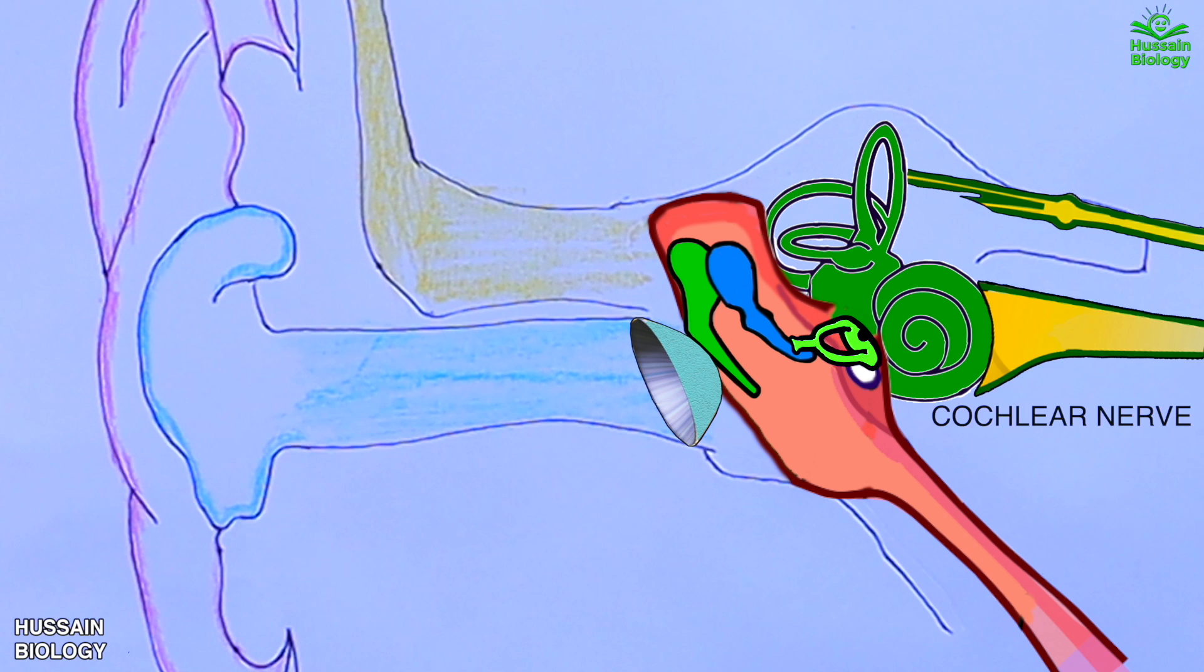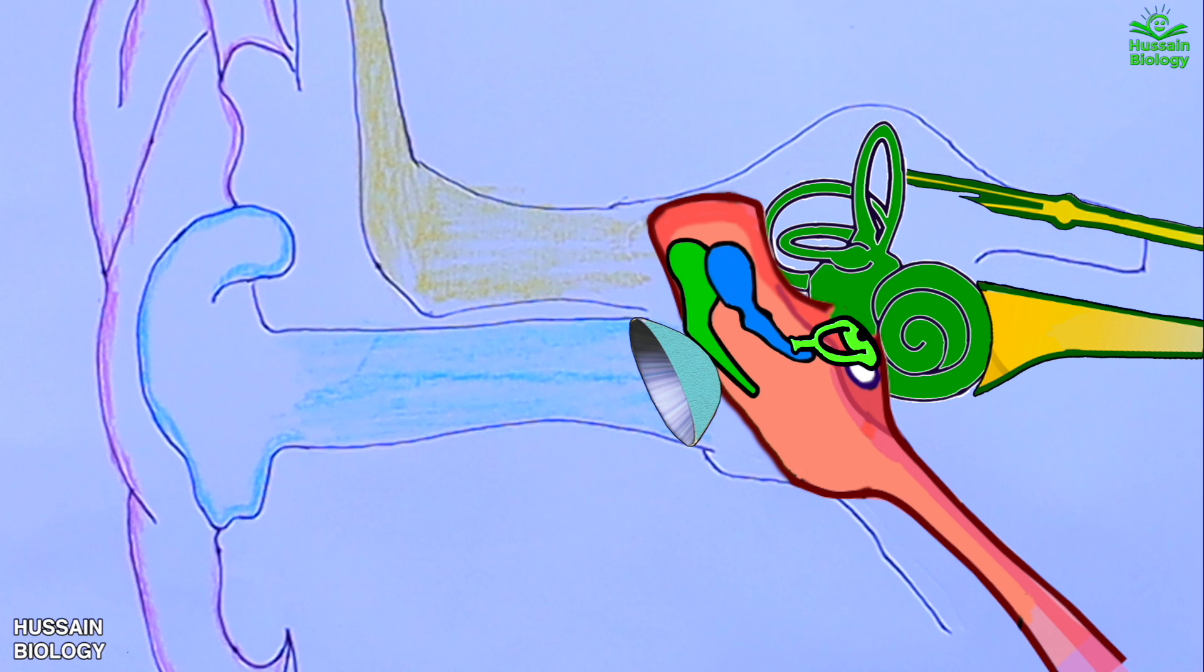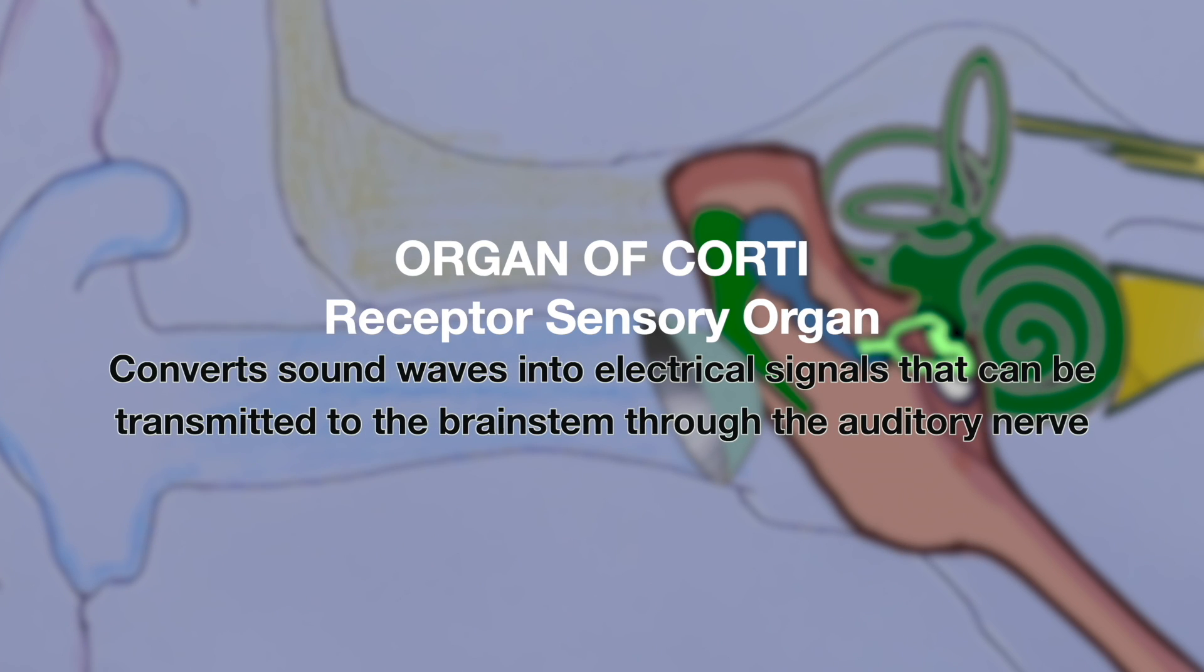It must be noted that the mammalian cochlea has the organ of Corti. Precisely, it's located in the scala media of the cochlea of the inner ear, between the vestibular duct and the tympanic duct, and is composed of mechanosensory cells known as hair cells.